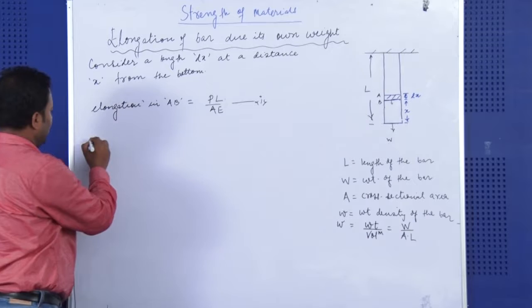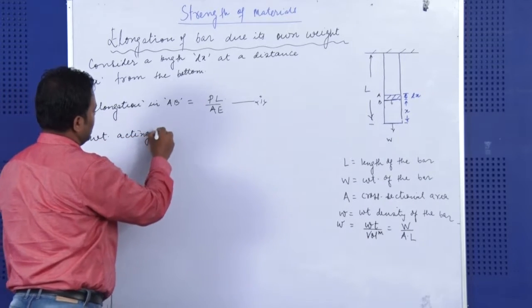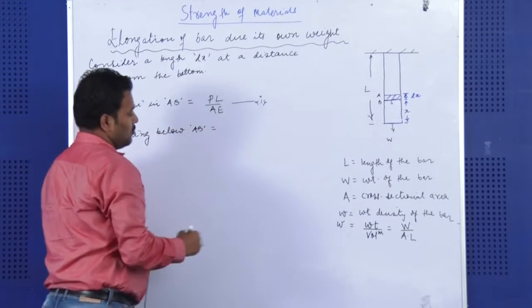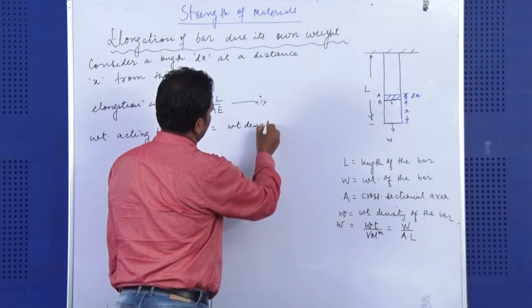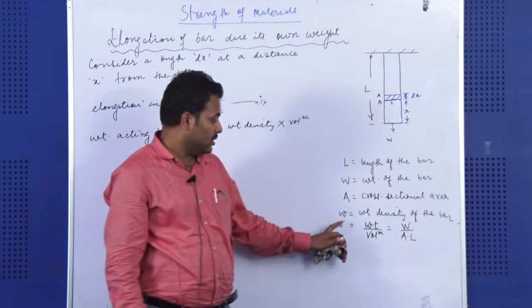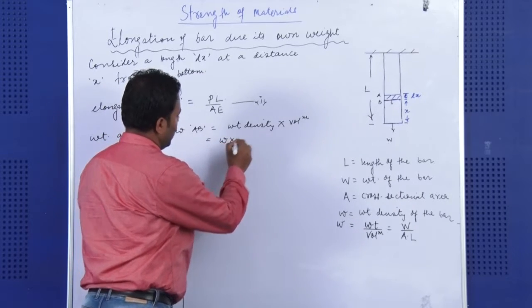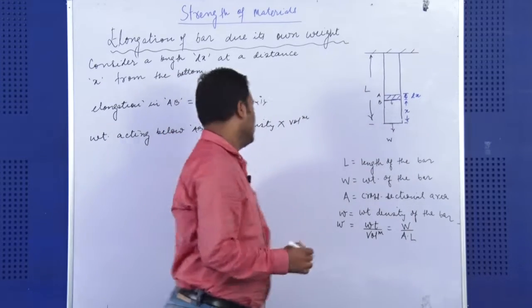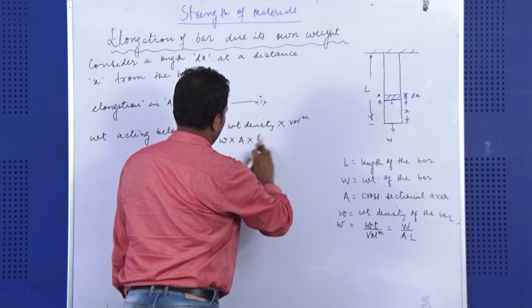So if I write, if I wish to find weight acting below AB, it would be equal to weight density into volume. This weight density we have assumed as small w. So weight density is small w, volume would be area, the cross sectional area A, we have assumed as a constant, and the length is X over here.